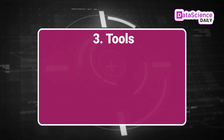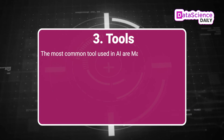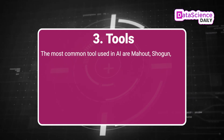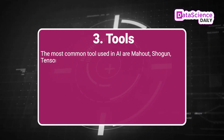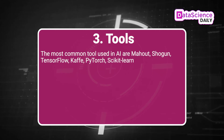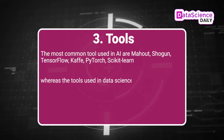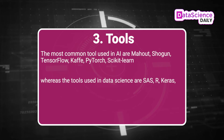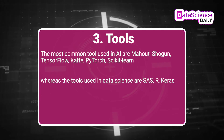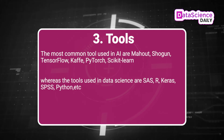3. TOOLS — The most common tools used in AI are Mahout, Shogun, TensorFlow, Caffe, PyTorch, and Scikit-learn, whereas tools used in data science are SAS, Arc, Keras, SPSS, Python, etc.